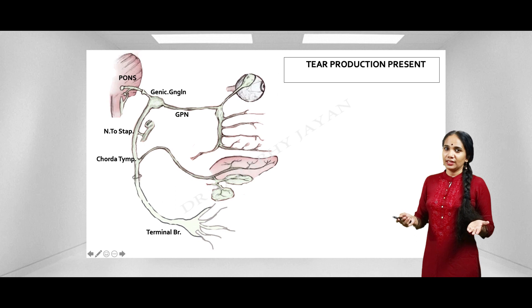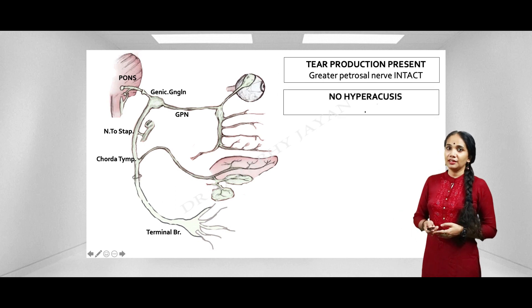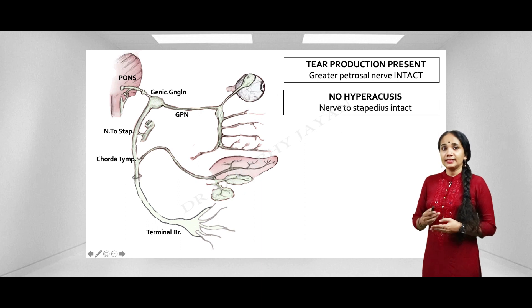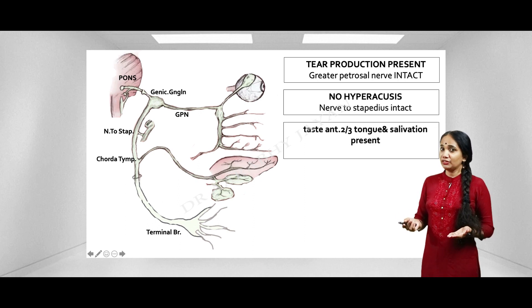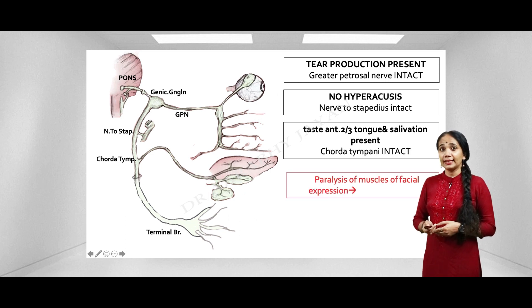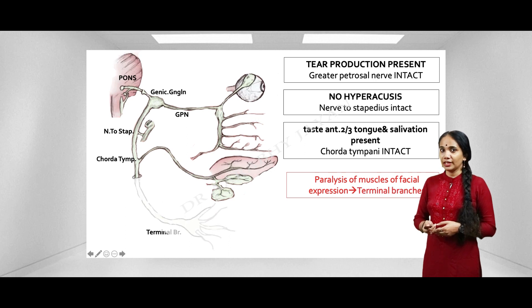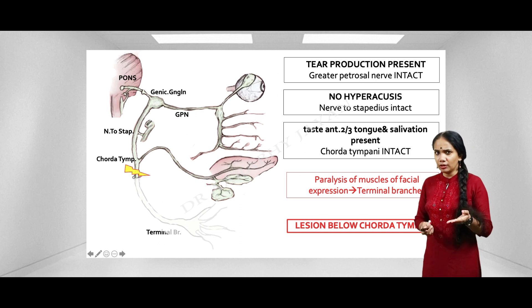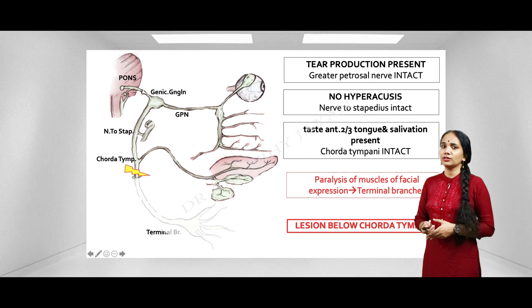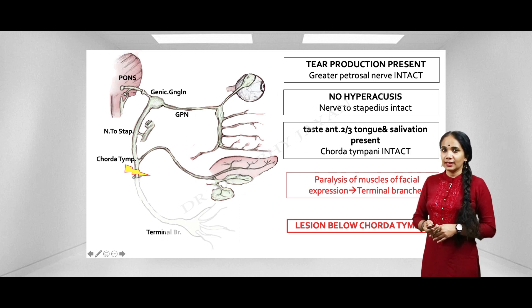Case 4: Normal tear production, no hyperacusis, taste and salivation are perfectly normal — the chorda tympani is intact. The patient only has paralysis of facial muscles, meaning only the terminal branches are gone. The lesion is therefore below the level of the chorda tympani, either just above or just below the stylomastoid foramen.